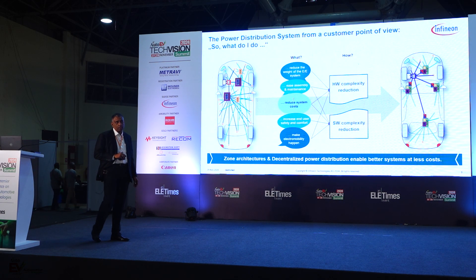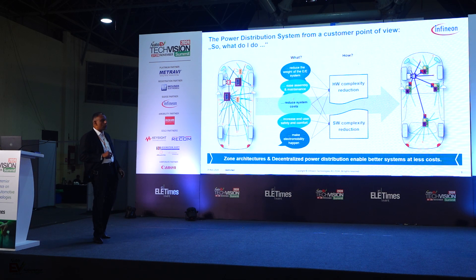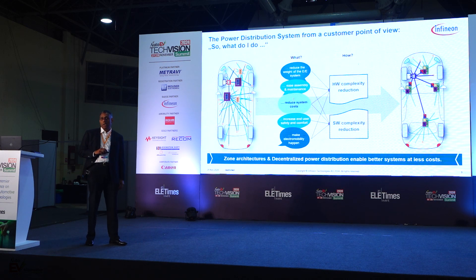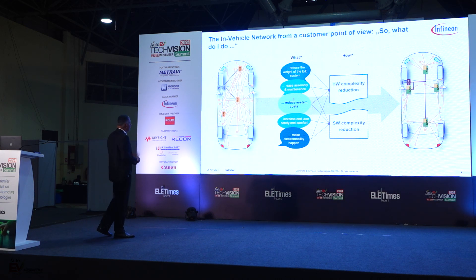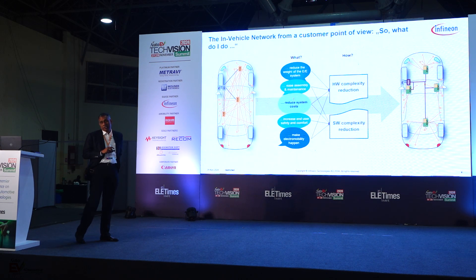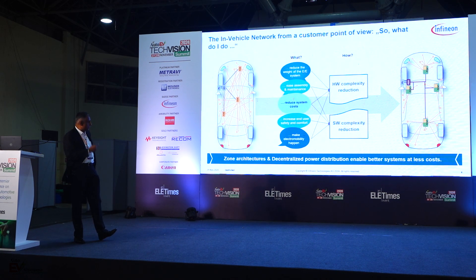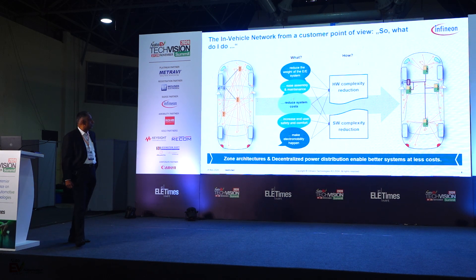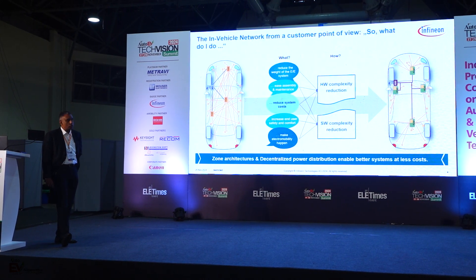So what are these things in terms of e-architecture? Two very important things. One is zonal and the other is decentralized power distribution systems — these are the ones we actually see driving a lot of these new e-architectures in vehicles. Similarly, from an in-vehicle network customer point of view, what is driving change again is zone architecture and decentralized power distribution systems. My presentation today will cover this and adhere to many of the topics we are seeing in terms of changes.